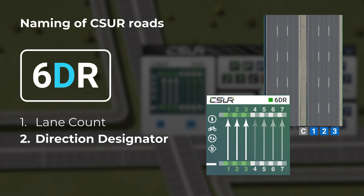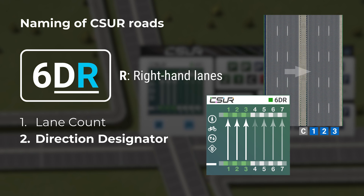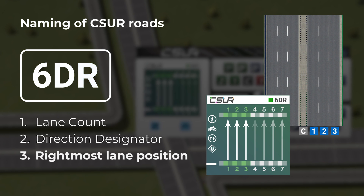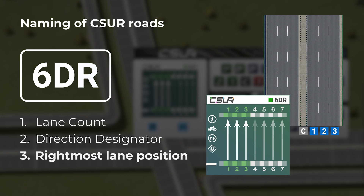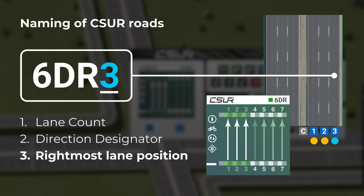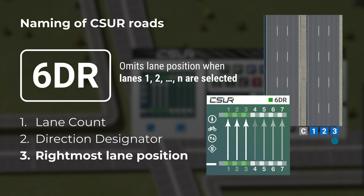The second part is the direction designator. The letter D indicates two symmetric roadways, and R means each roadway is at the right side of the center, separated by a median. The third part is the location of the rightmost lane in each roadway. With lanes 1, 2, and 3 selected, the rightmost lane is at position 3, making the full name 6DR3. However, since the rightmost position equals the number of lanes per direction, the position number is omitted for simplicity.